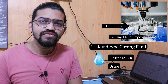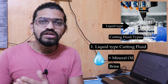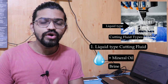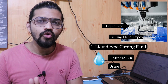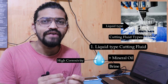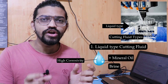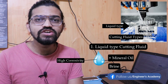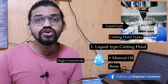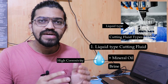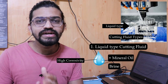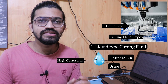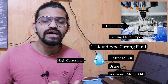In the liquid type, water cannot be used alone because although water has low viscosity and good lubricating properties, it also has corrosive properties. Therefore, mineral oils are always added to water to create a good cutting fluid, which can also be called a semi-synthetic coolant. Other cutting fluids such as kerosene or motor oils are used for special machining operations.